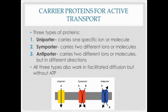There are three different types of proteins used as carrier proteins or pumps for active transport. These are also used in facilitated diffusion, but in those cases without ATP as they are not moving against the gradient. The three types are: uniporter, carrying one specific ion or molecule across the membrane; symporter, carrying two in the same direction; and antiporter, carrying two but in different directions.